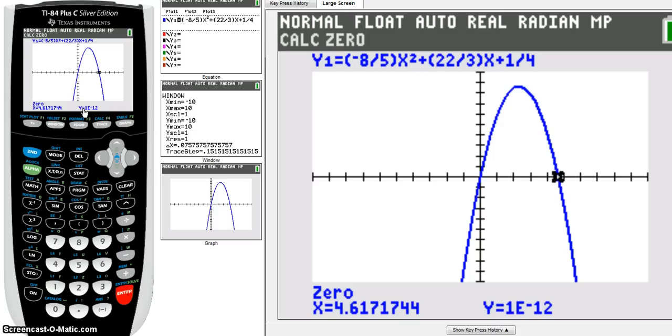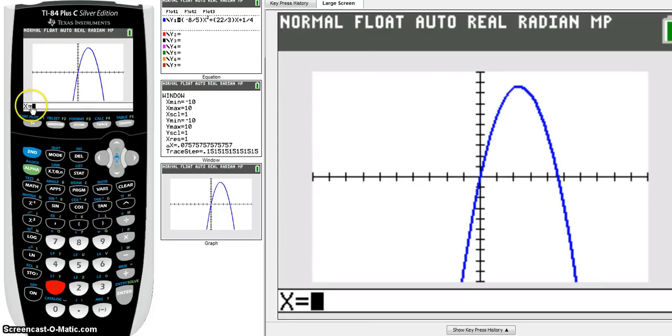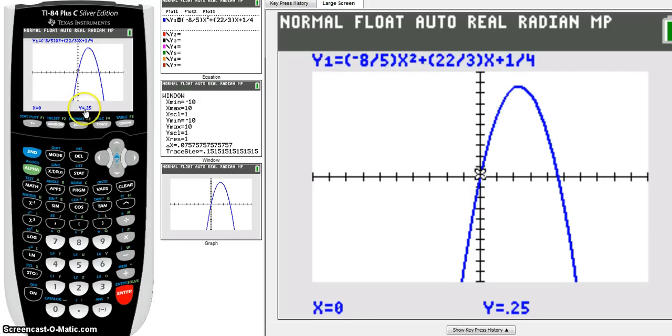Then part D, it says find the y-intercepts using your calculator. Well, I know the y-intercept is about there. To find it, I go back to the trace menu to go to calculate. So second trace and calc value. And I'm going to choose option 1. And you can, for value, it says plug in an x-value. Well, the y-intercept has an x-coordinate of 0. So I'm going to plug in x equals 0. All y-intercepts has an x-coordinate of 0. So I'm going to plug in x equals 0. And it tells me the y is 2.25. So now I know my y-intercept is 0, 0.25.